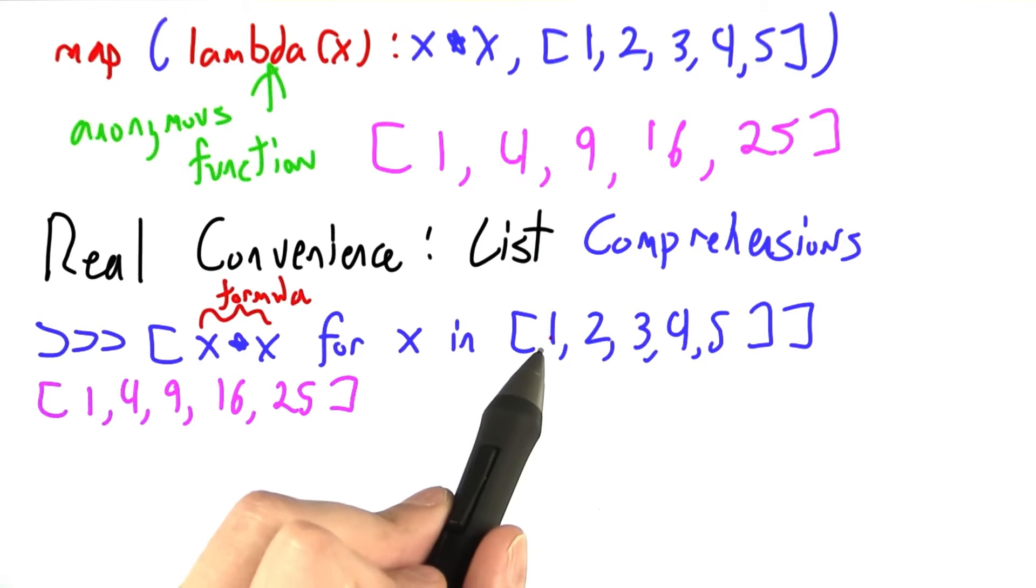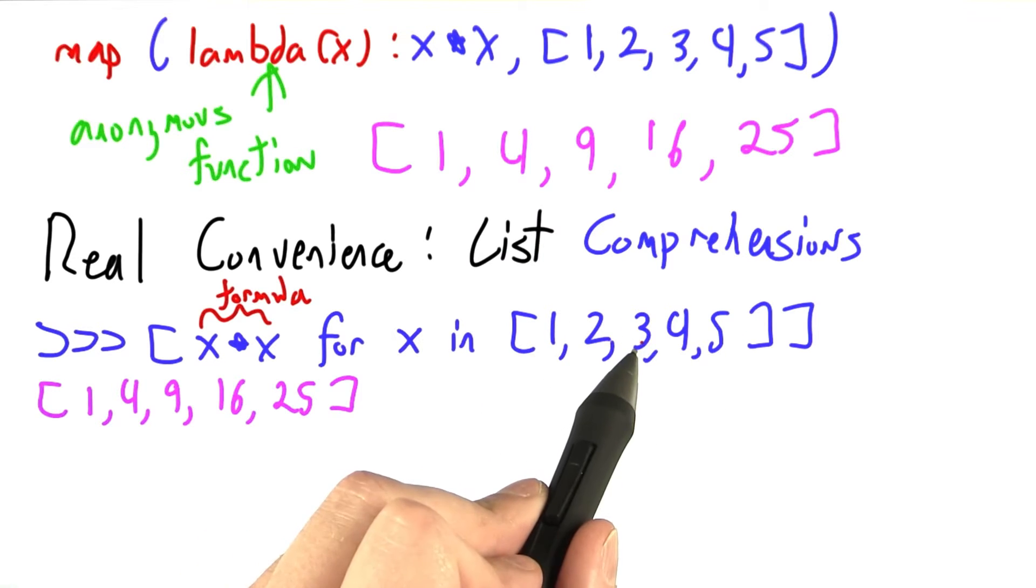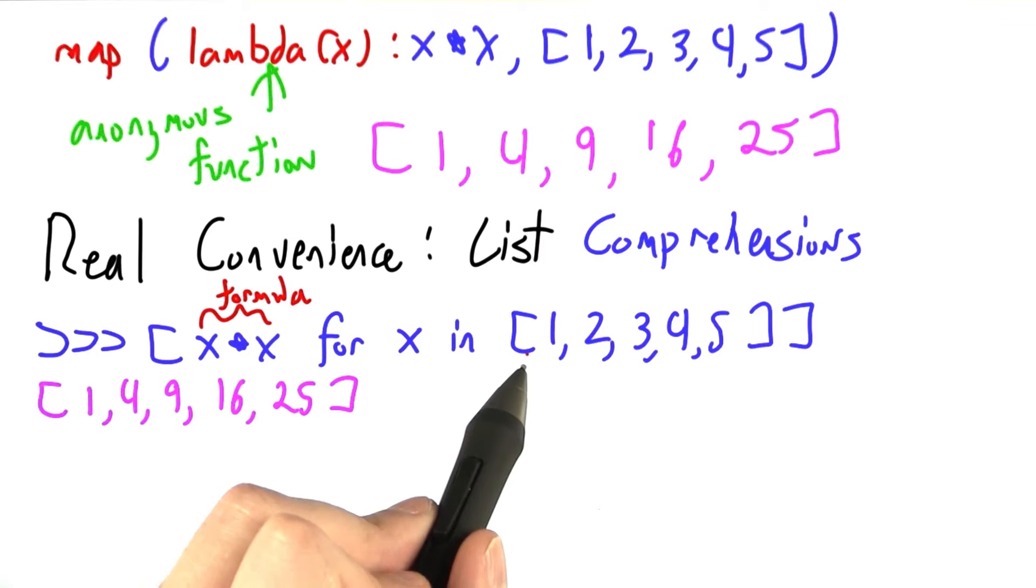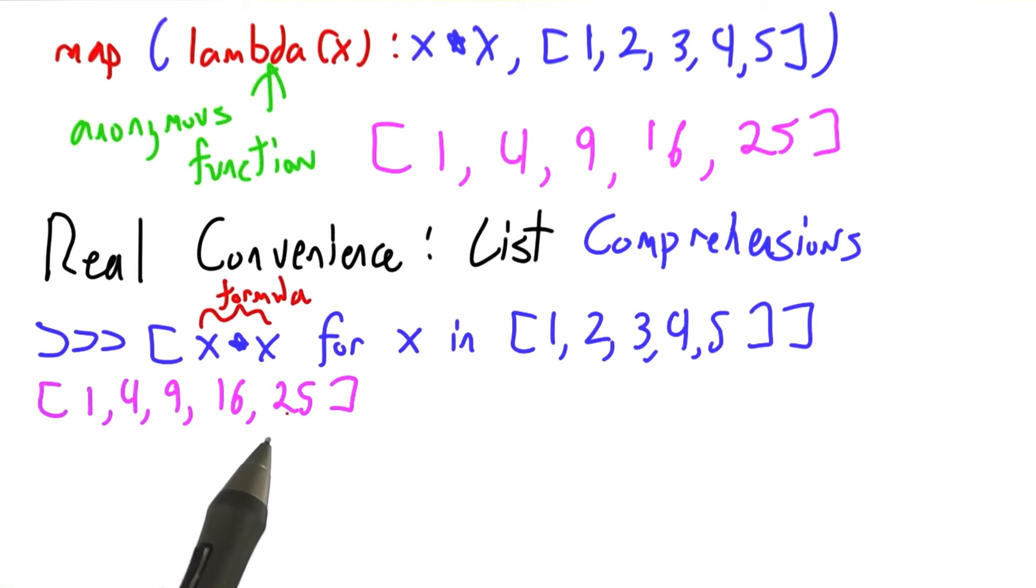So this is saying for every x in 1, 2, 3, 4, 5, so x is going to be 1, then it'll be 2, then it'll be 3, then it'll be 4, then it'll be 5. For each one of those, put x times x in the output list.